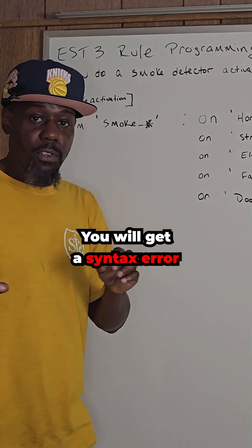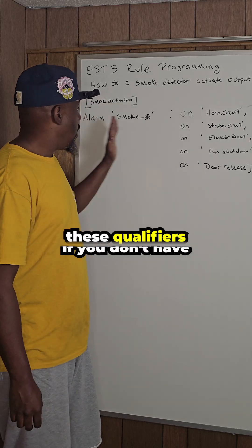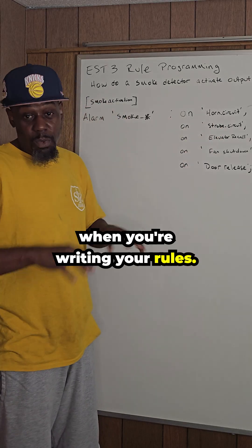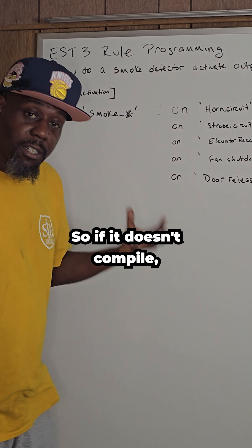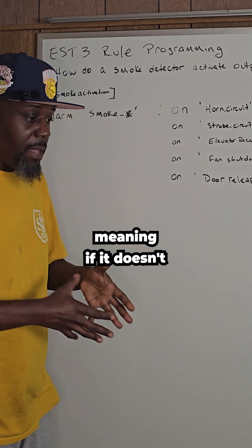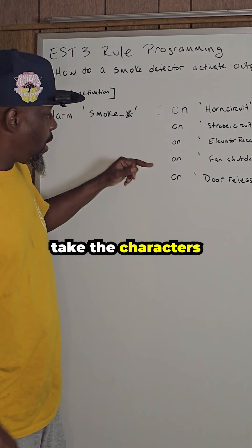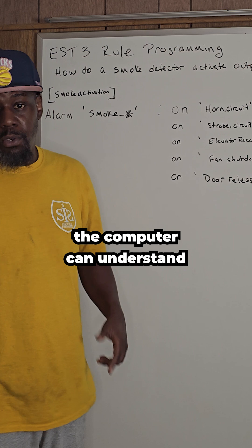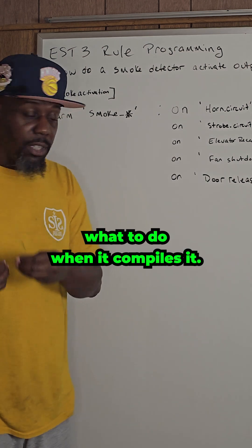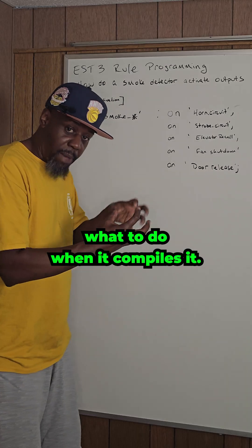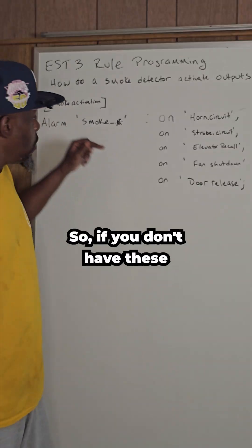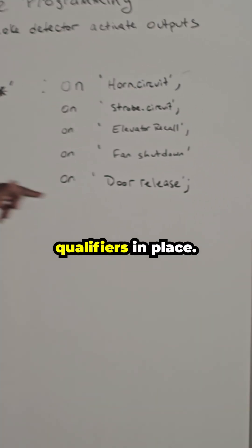When you finish activating all of your outputs, you end it with a semicolon. You will get a syntax error if you don't have these qualifiers in place when writing your rules. If it doesn't compile — meaning if it doesn't take the characters and turn them into numbers so the computer can understand what to do — you'll get an error if you don't have these qualifiers in place.